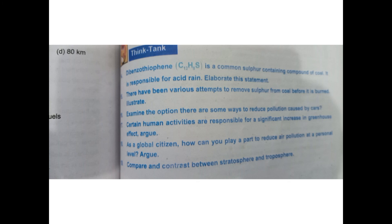To reduce air pollution at a personal level: use fewer vehicles and use public transport compared to private. You can use paper bags instead of plastic bags, because plastic bags also contribute to chlorofluorocarbons which help in ozone depletion. Reduce use of chlorofluorocarbon-containing products such as sprays, paints, hair sprays, and air fresheners — if we reduce all of them, we can reduce the chlorofluorocarbons.